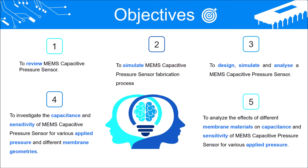The five main objectives of this project are: to review MEMS Capacitive Pressure Sensor; to simulate MEMS Capacitive Pressure Sensor fabrication process; to design, simulate, and analyze a MEMS Capacitive Pressure Sensor; and to investigate the capacitance and sensitivity of the pressure sensor with different membrane geometry, which is circular, square, and octagonal membranes.